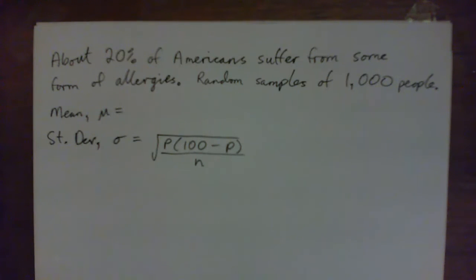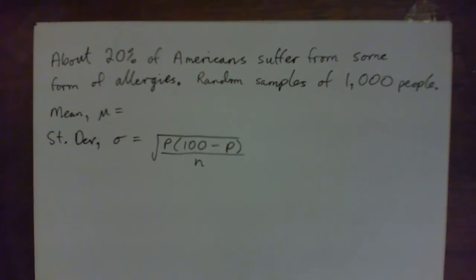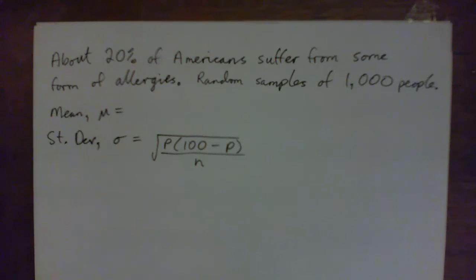We've got a question: 20% of Americans suffer from some form of allergies. We're going to study random samples of a thousand people to get the mean and standard deviation, then look at what would be usual and unusual. The specific question is: how unusual would it be to find a random sample of a thousand people in which 25% suffered from allergies?